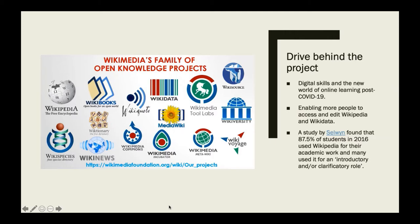85.7% of students in 2016 said that they used Wikipedia in some aspect in their work, and many, including myself and my friends, use Wikipedia as a springboard to go on and access other information. During this time, Wikipedia has had a surge of page views and become a crucial source of information for people around the world and for homeschooling. For example, the English language page for COVID-19 had more than 73 million page views by July 30th, 2020, and there were more than 5,200 new Wikipedia pages on COVID-19 in the first few months of the pandemic.